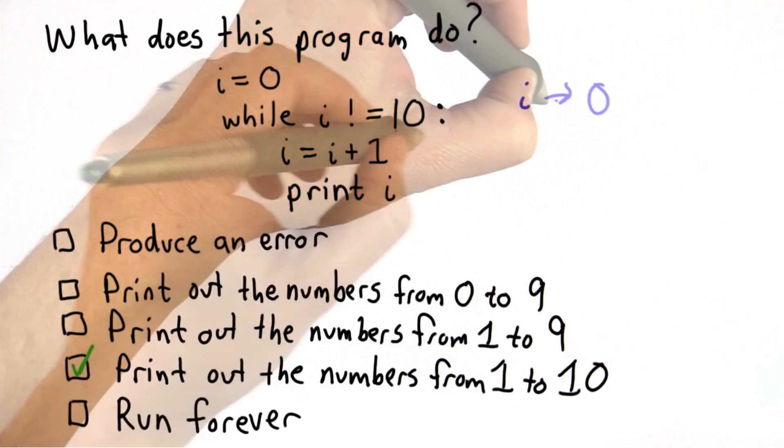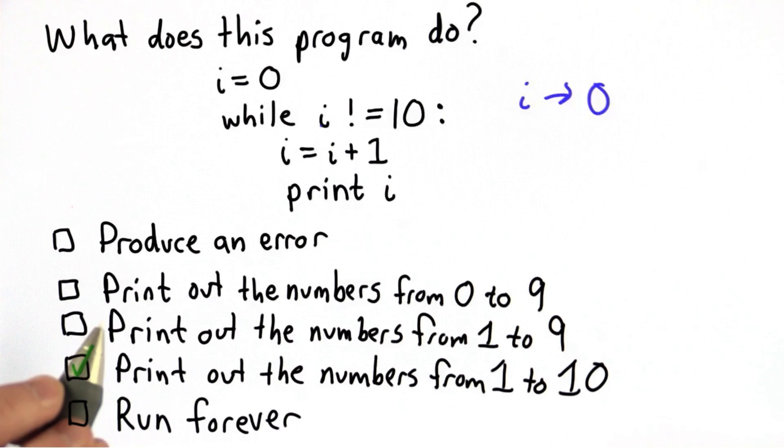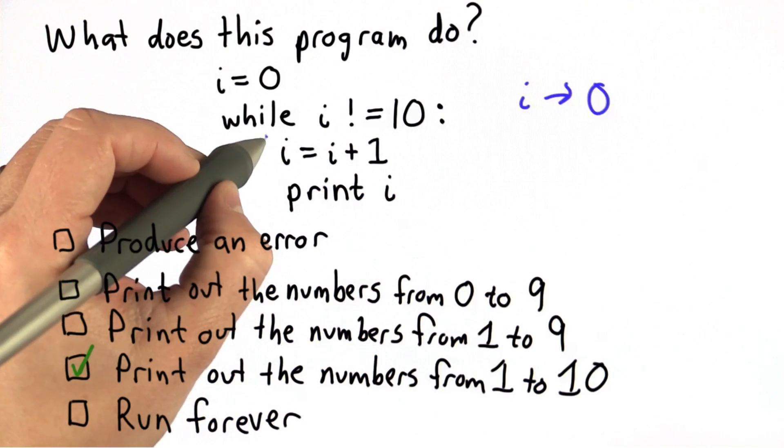So initially, the value of i is 0. The test says, well, i is not equal to 10. So 0 is not equal to 10, so we go through the block.